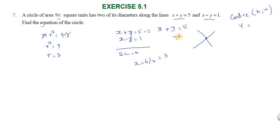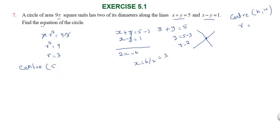Solving: from the two diameter lines, substituting gives y equal to 5 minus 3, that is y equal to 2. So the center point is (h, k) equal to (3, 2). That is, the center (x, y) is (3, 2).